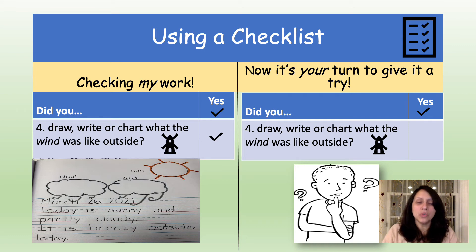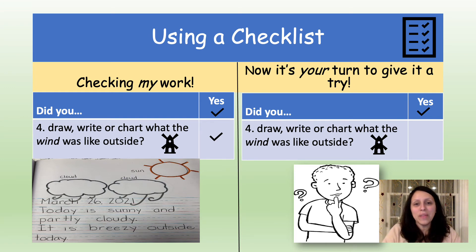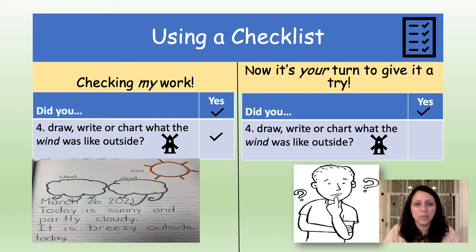Number four asks: did you draw, write, or chart what the wind was like outside? Here's an example of my work. I drew a picture of the sun and the clouds, but I also added a little more information. I drew lines coming down from the clouds with a little curve to show that there was some wind. I wrote 'it is breezy outside today.' So that describes what the wind was like — breezy means a light wind. Because I did draw and write what the wind was like outside, I gave myself a check. Now it's your turn. Did you draw, write, or chart what the wind was like outside? If you did, you can give yourself a check.